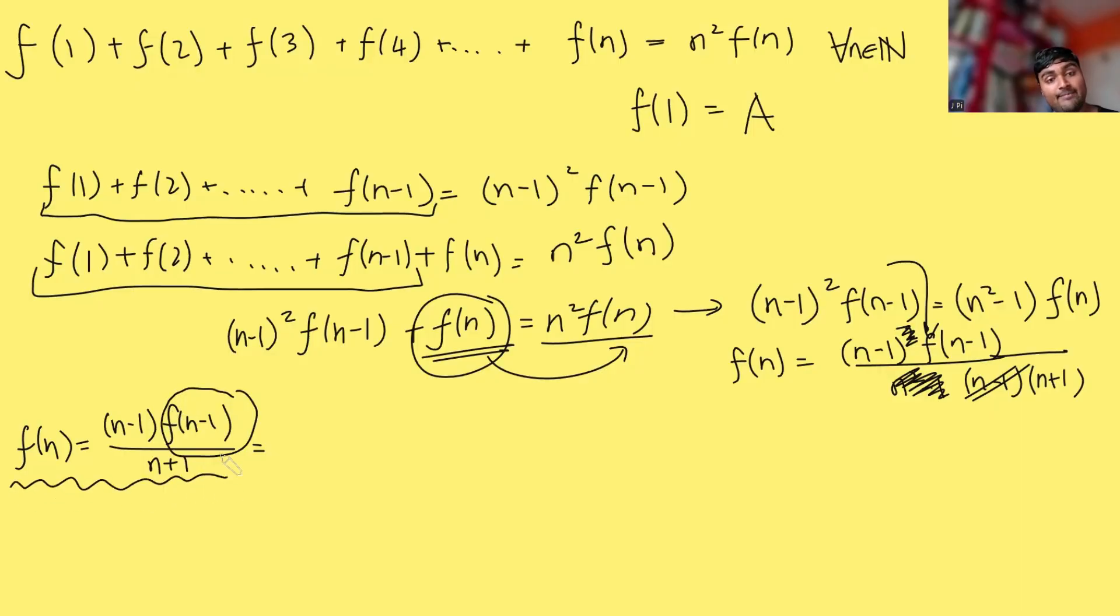Just using this formula again but swapping the n's for n-1's. So this n-1 here is going to stay the same and so is the n+1 on the bottom but f(n-1) according to this formula so just swapping the n in this formula that I've underlined here with an n-1 is the same as (n-2) f(n-2) all divided by so if the n on the bottom turns into an n-1 it's n-1+1 which is n.